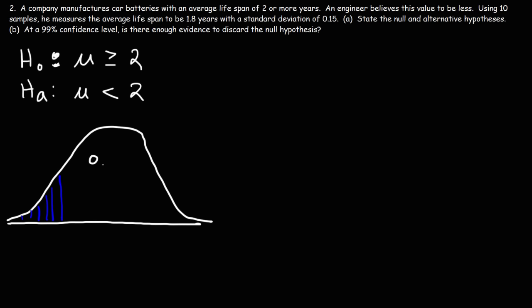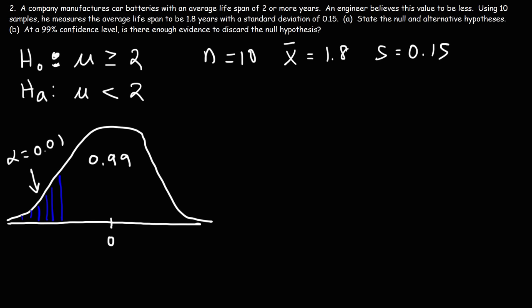In Part B, we're dealing with a 99% confidence level. The area of the unshaded region is 0.99, and alpha — the shaded area — is 0.01. That gives us a left-tail normal distribution. Now, should we use the z-test or the t-test? The sample size is 10, the sample mean is 1.8 years, the sample standard deviation is 0.15, and the hypothesized mean is 2. Since the sample size is less than 30, we should use the t-distribution.